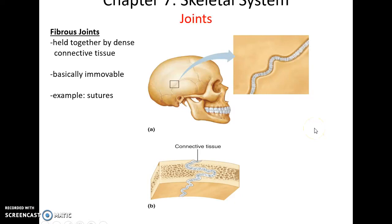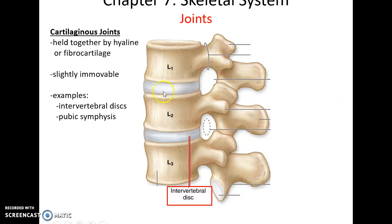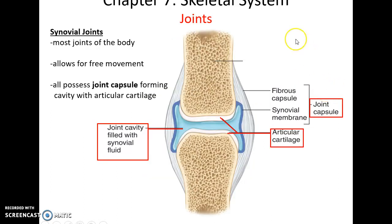There are a variety of joint types. Fibrous joints are held together by dense connective tissue and are basically immovable — the sutures of the skull are an example. Cartilaginous joints attach bones by a piece of cartilage, either hyaline cartilage or fibrocartilage; they are mostly immovable but can move a little, including the intervertebral discs between the vertebrae.